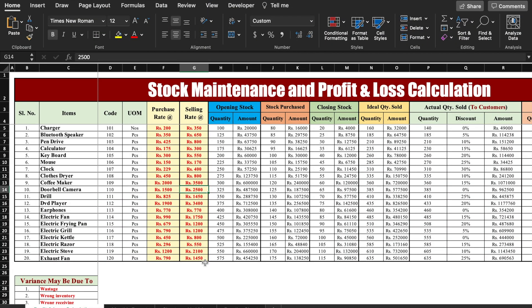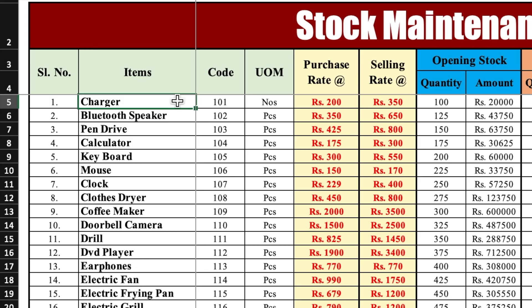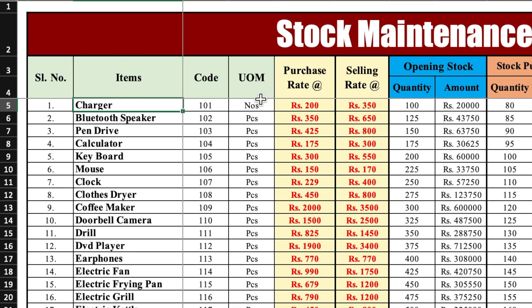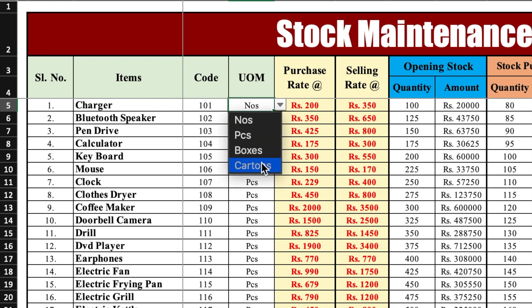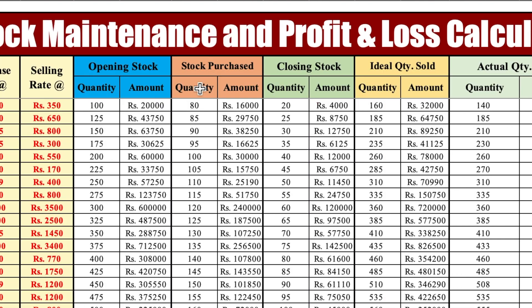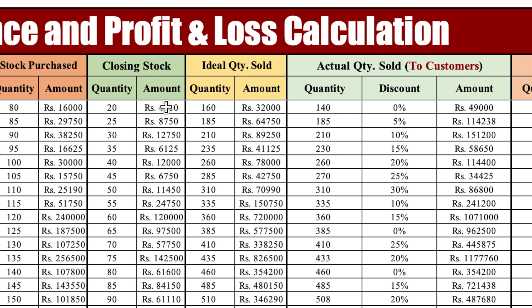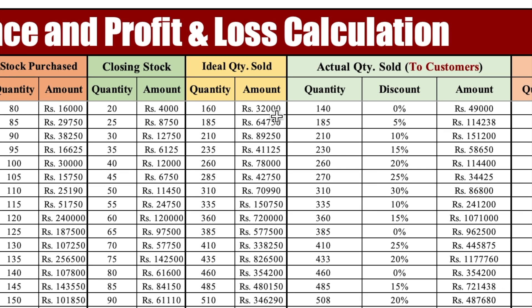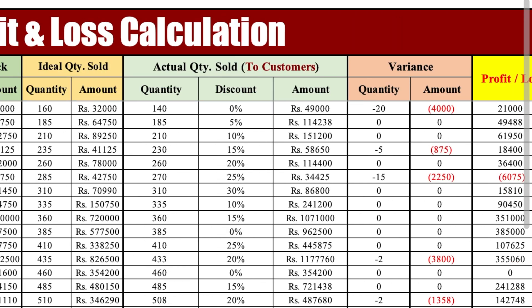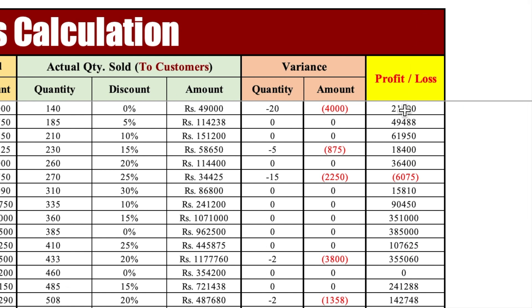This is the stock sheet which I have made in advance. There are few things like name of the items along with codes, unit of measurement managed by drop-downs — numbers, pieces, boxes or cartons — and you can increase the list. Purchase rate is here, selling rate is here. Opening stock is along with quantity and amount, stock purchase quantity and amount, closing stock quantity and amount. Ideal quantity sold means how much quantity you should be selling as per your stock count. Actual quantity sold — how much quantity you sold to customers — quantity discount along with the amount. On the right side there is a column of variance and profit and loss.